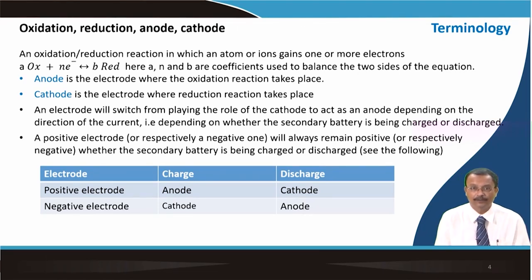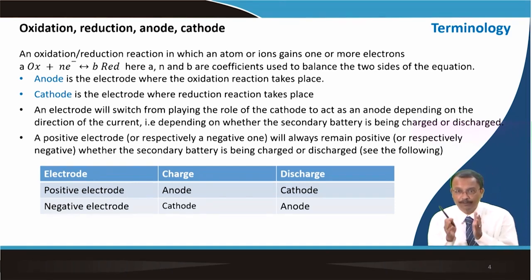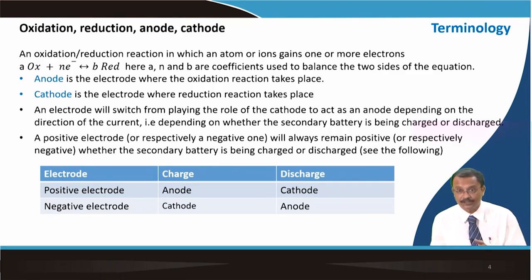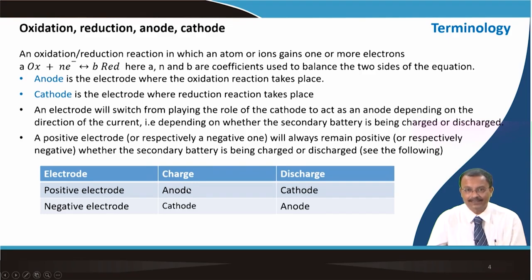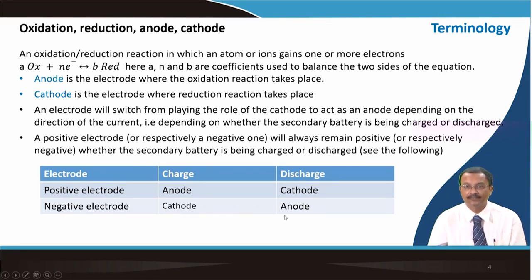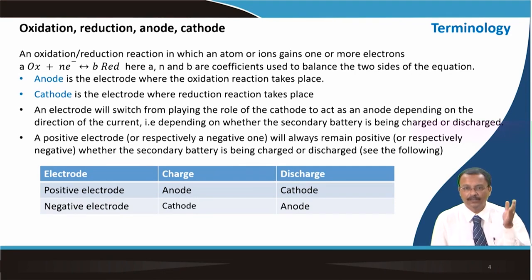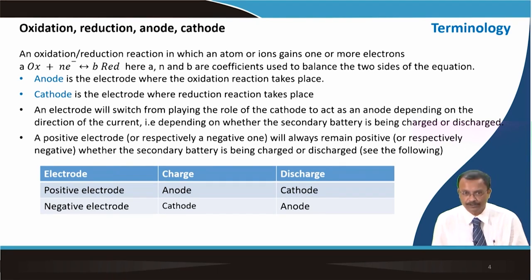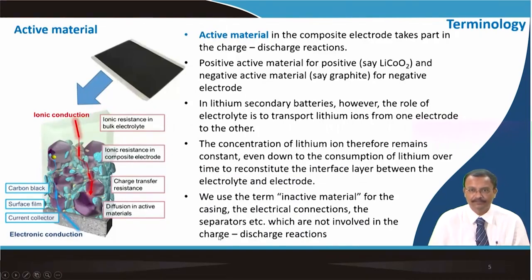A positive electrode or a negative electrode will always remain positive or negative respectively, whether the secondary battery is being charged or discharged. The positive electrode acts as an anode during charge and as a cathode during discharge. The negative electrode acts as a cathode during charge and as an anode during discharge. So in a rechargeable battery, we will no longer use the terms cathode or anode — instead, we always use positive electrode or negative electrode.